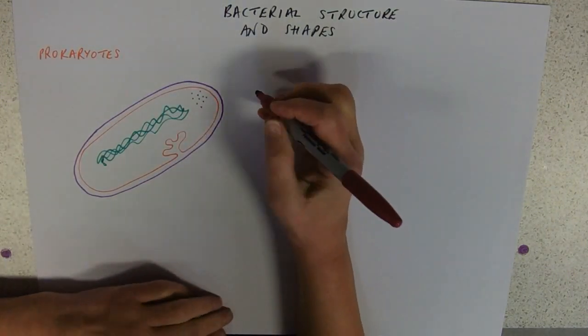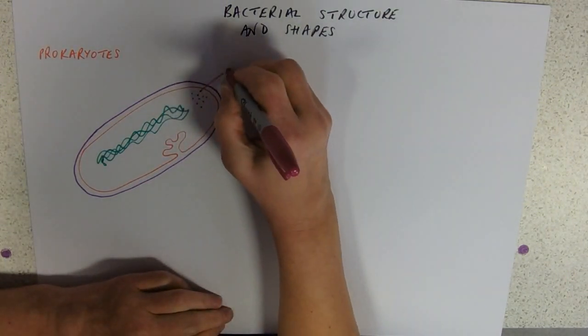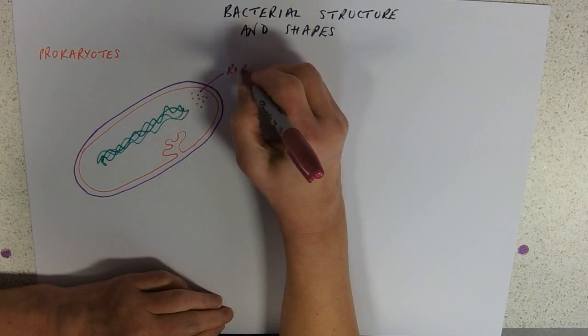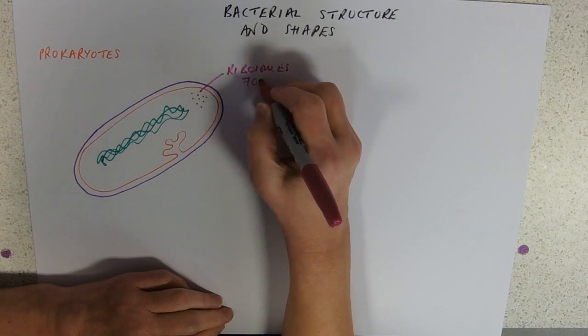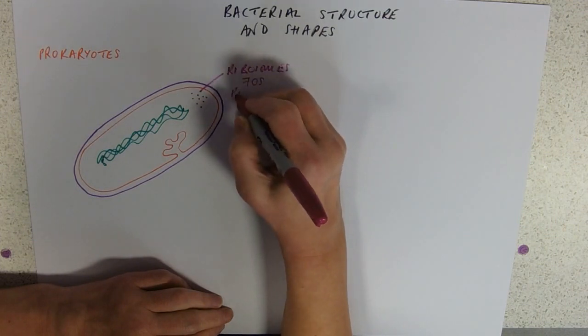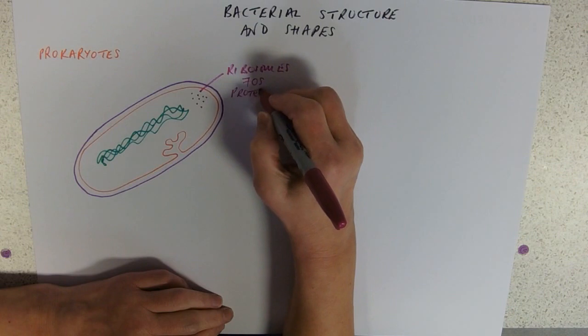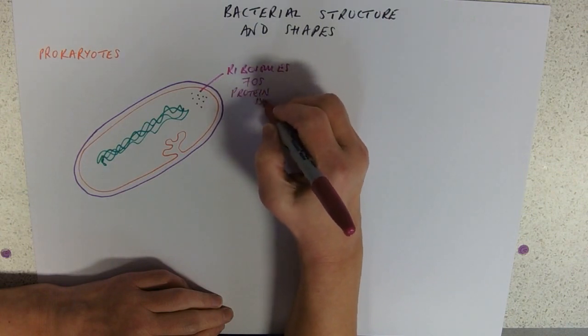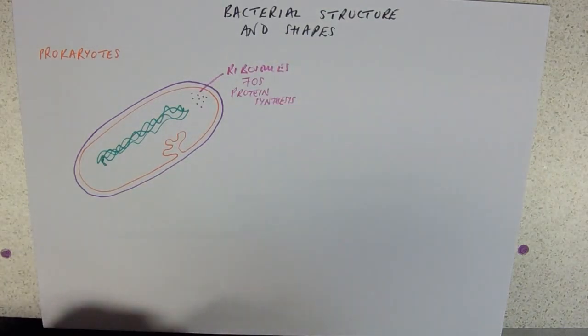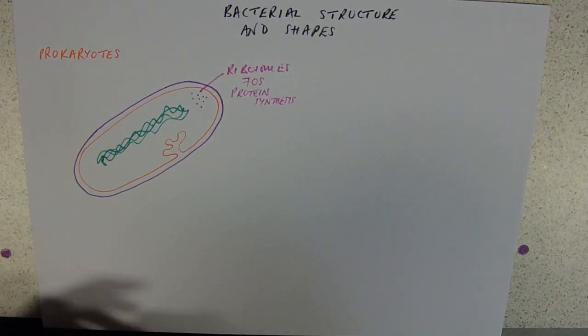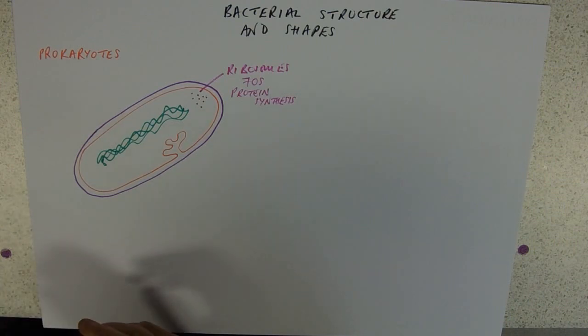So, these ribosomes are 70S. Their job, of course, is protein synthesis. And this is kind of, you know, this is the basic model of a prokaryote.